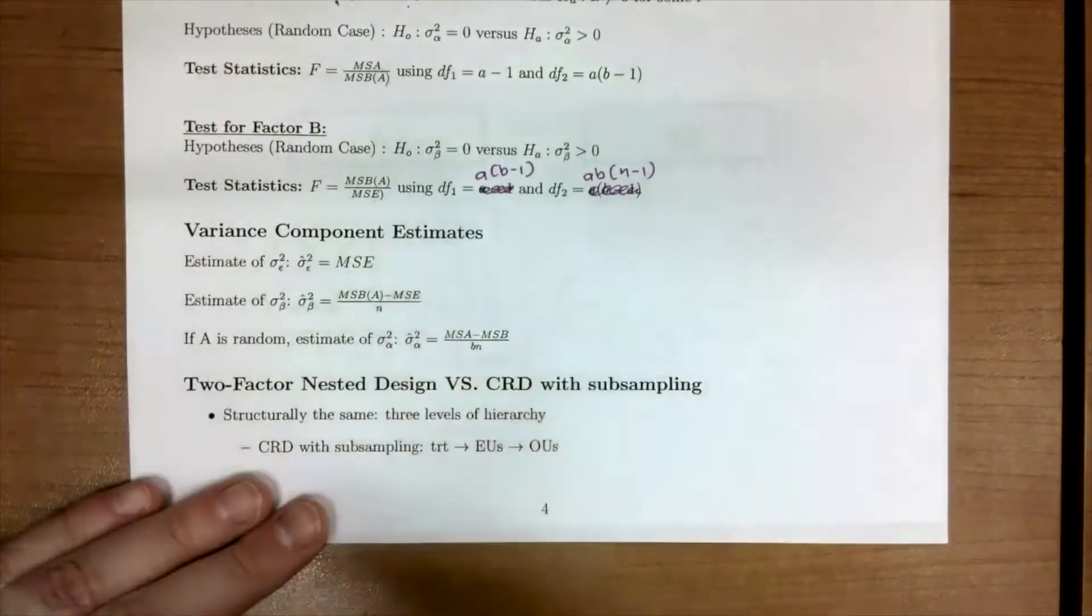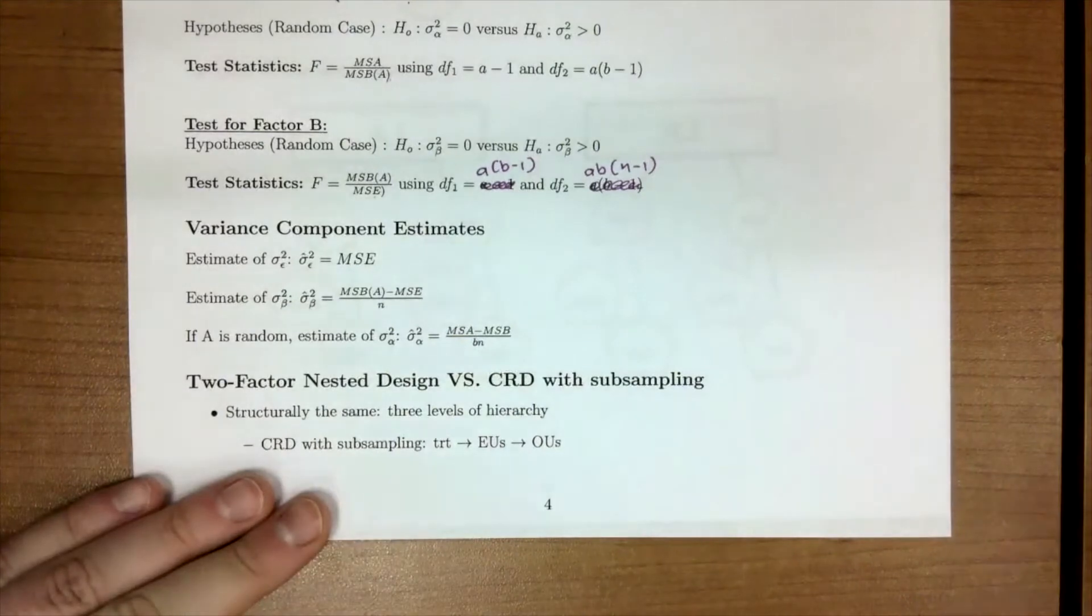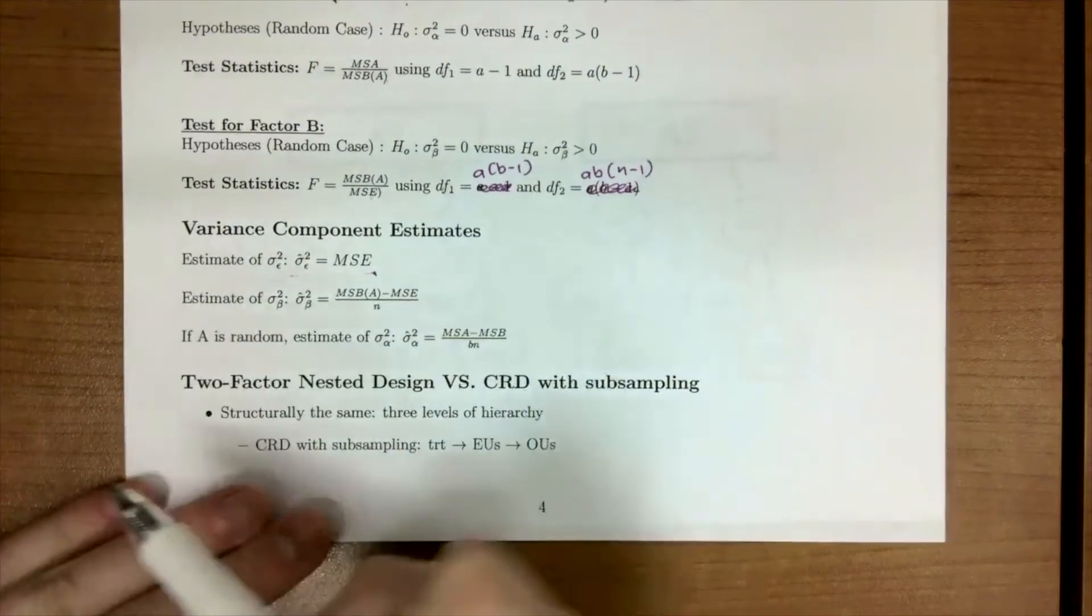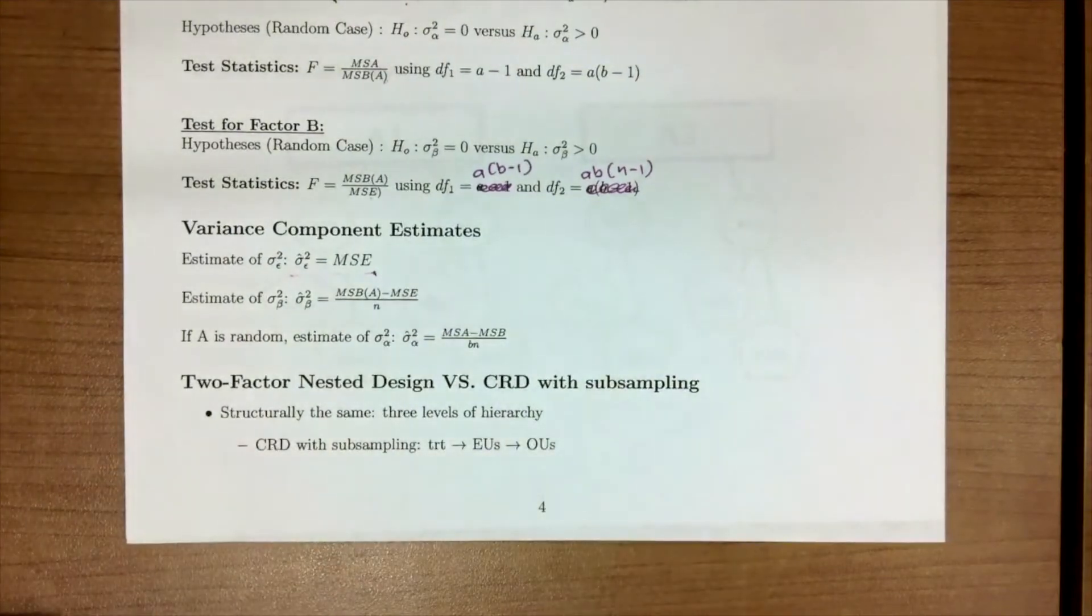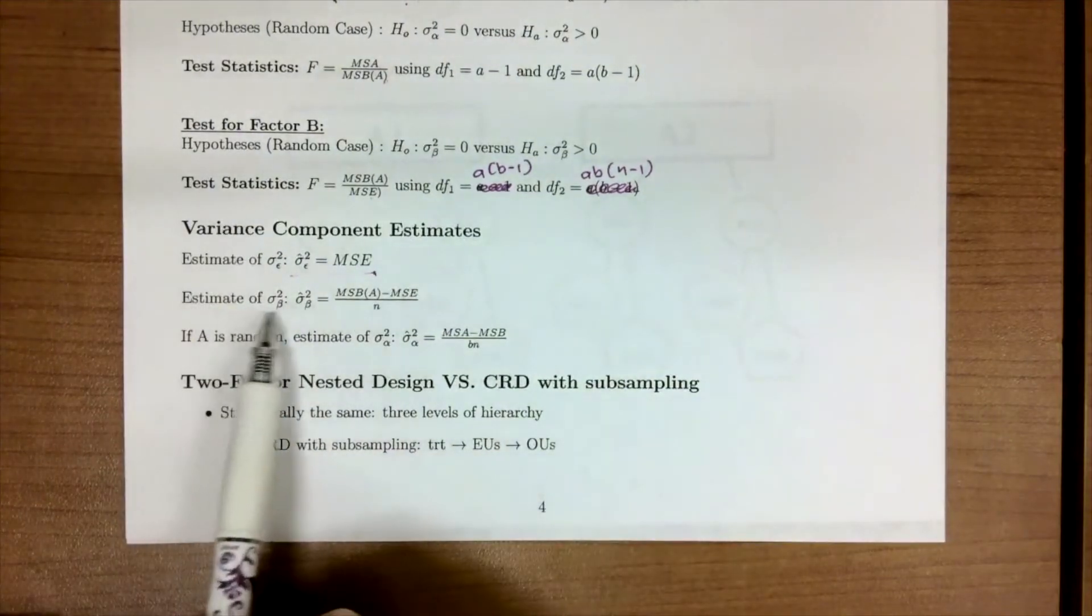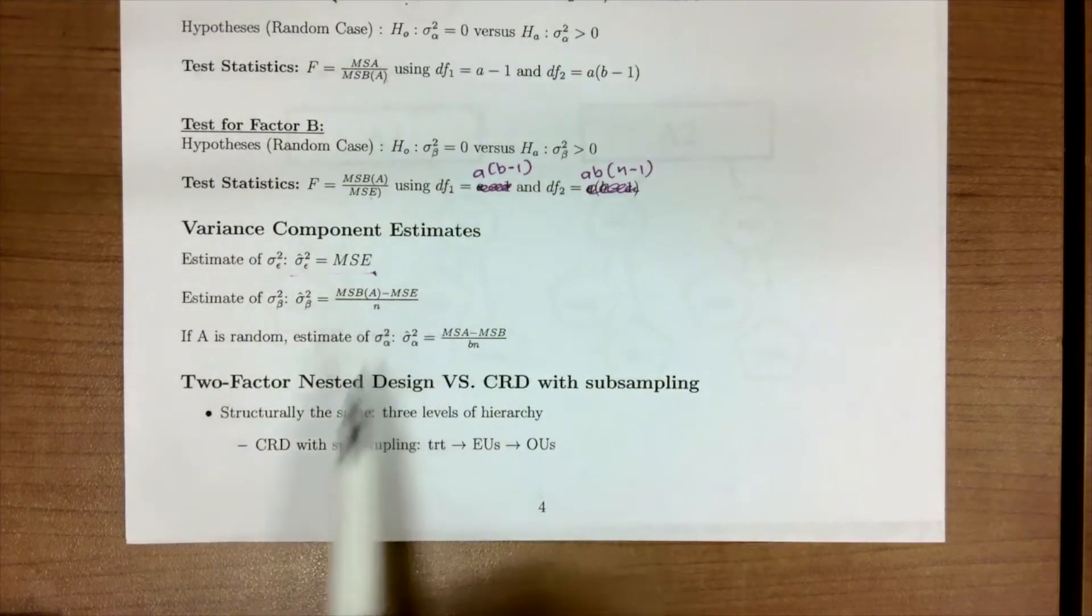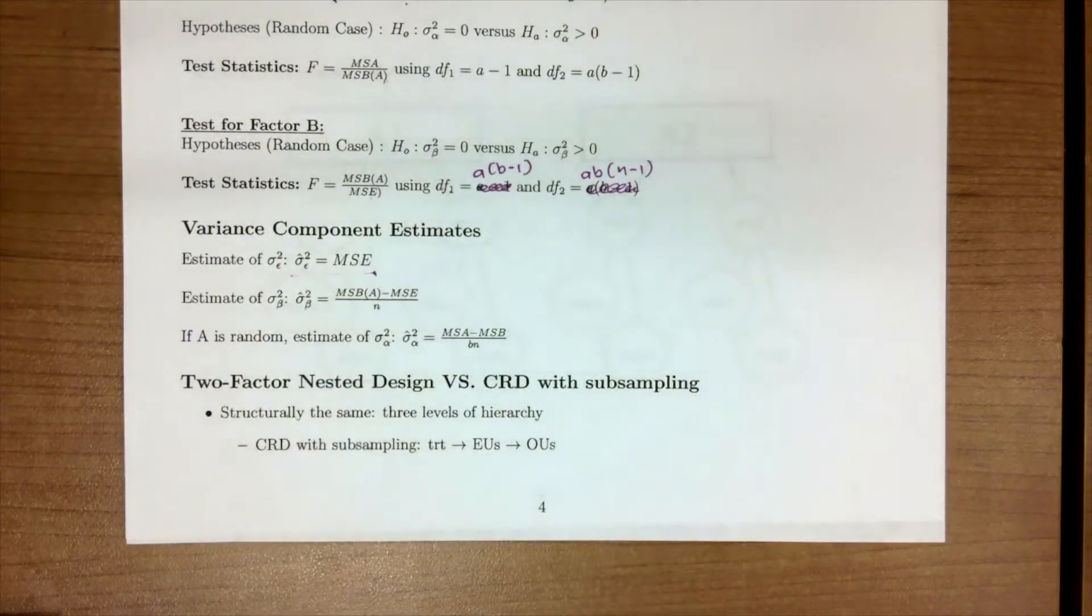Our variance components are similar to how we've gotten them previously. Obviously, our σ²_ε is going to be our MSE. And then our variance for our β is going to be MSB nested in A minus MSE divided by N. And if A was random, then we would also estimate that.